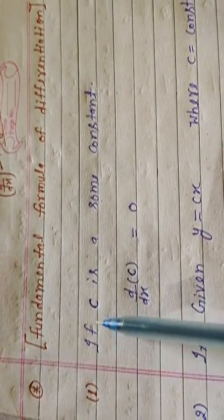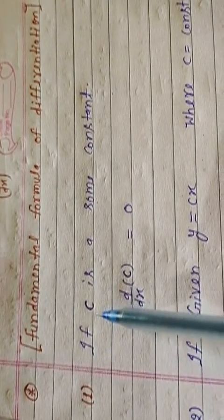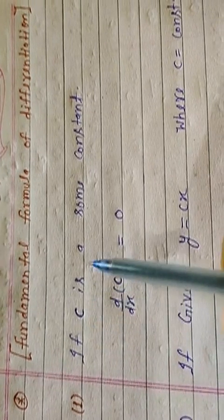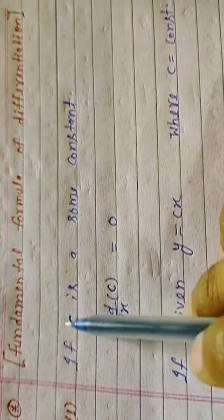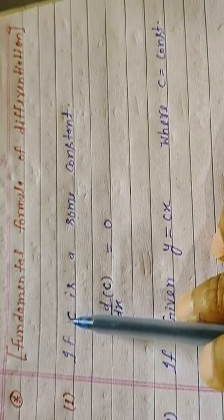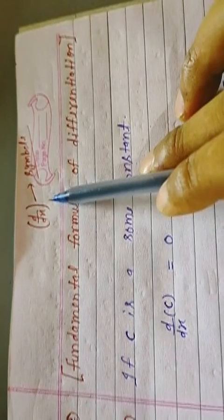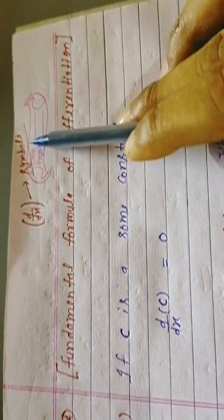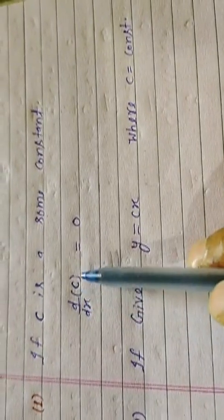The first formula of differentiation is: if C is a constant, the differentiation symbol is d upon dx. So d upon dx of C equals 0. This constant differentiates to 0.